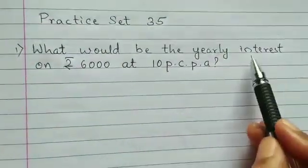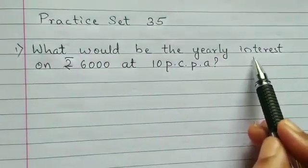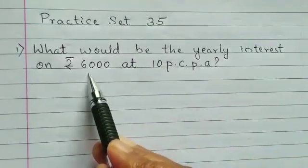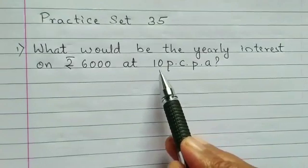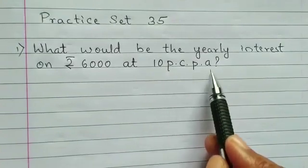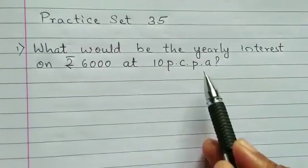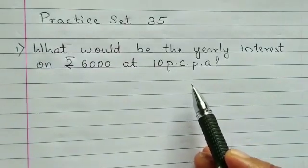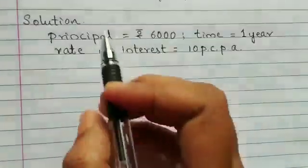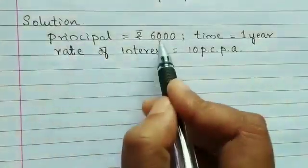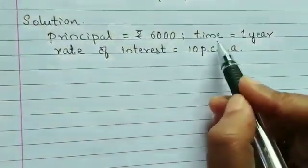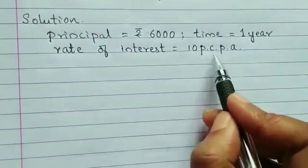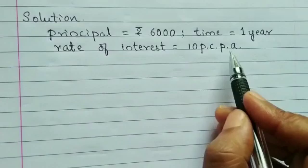Here, you have to find out the interest for one year. The principal is rupees 6000 and the rate of interest is 10% per annum. So, first we have to write what is given. Principal is 6000 rupees. The time is 1 year. And the rate of interest is 10% per annum.